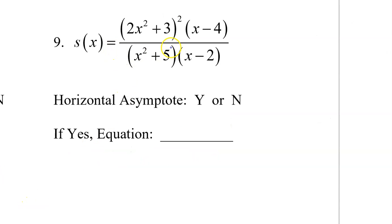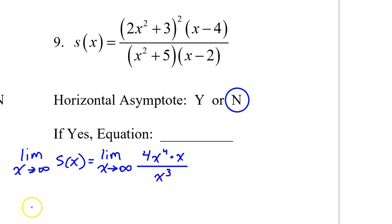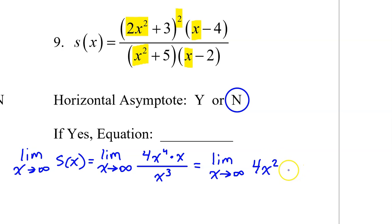Number 9, you should be able to quickly tell that there is no horizontal asymptote. The degree of the numerator is going to be x squared squared, so that's x to the fourth power, times x. So that's x to the fifth power. Meanwhile, in the denominator, we have x squared times x, which is x to the third power. When the degree of the numerator is greater, there is no horizontal asymptote. The right-end behavior simplifies to the limit as x approaches infinity of 4x squared. As x gets bigger and bigger, this expression approaches infinity. So, no horizontal asymptote.